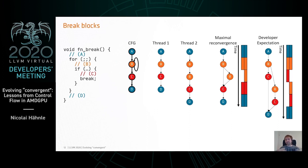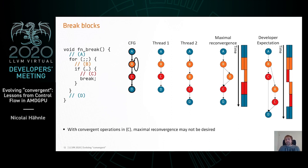Here's an interesting one we've actually encountered in the wild because people complained the compiler is buggy. It's a loop with a conditional break, and in block C something more is happening — there is a convergent operation. If two threads go through the loop a different number of times, just looking at the CFG where the break block is no longer part of the loop, you'd say everything should be reconverged — that's the maximal reconvergence picture. But the developer expectation, because C looked lexically as part of the loop, is that we execute it without reconvergence there.